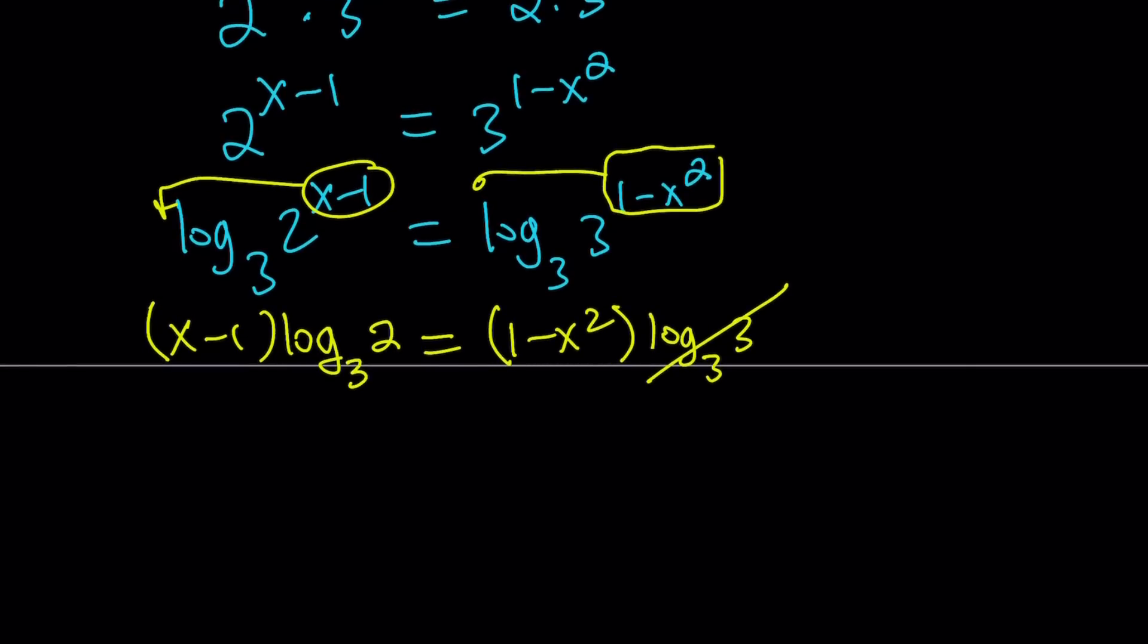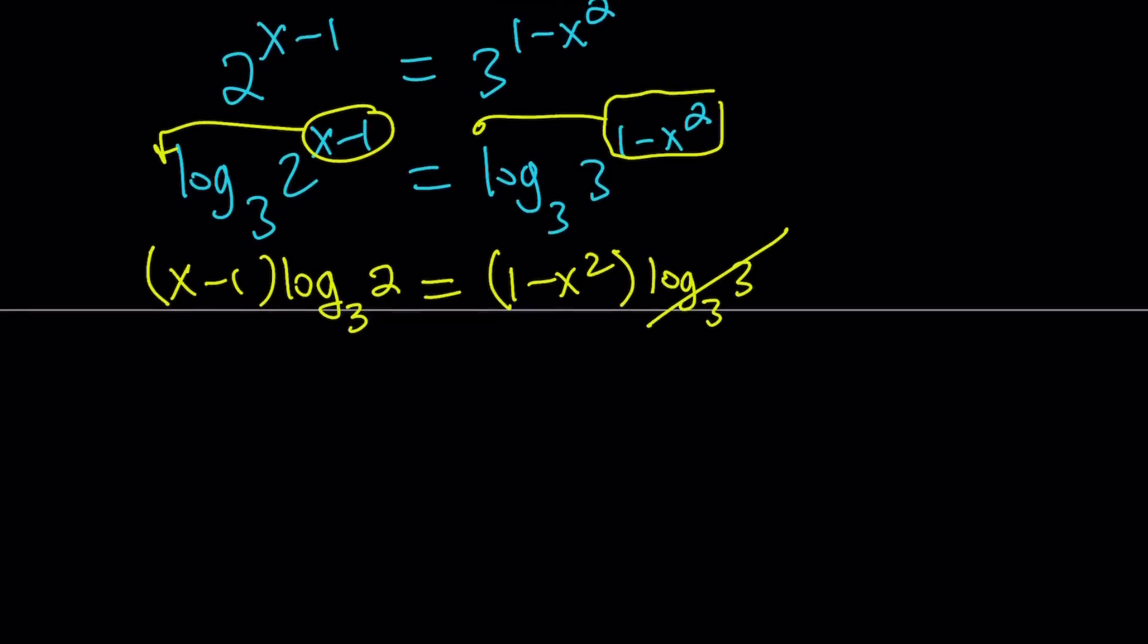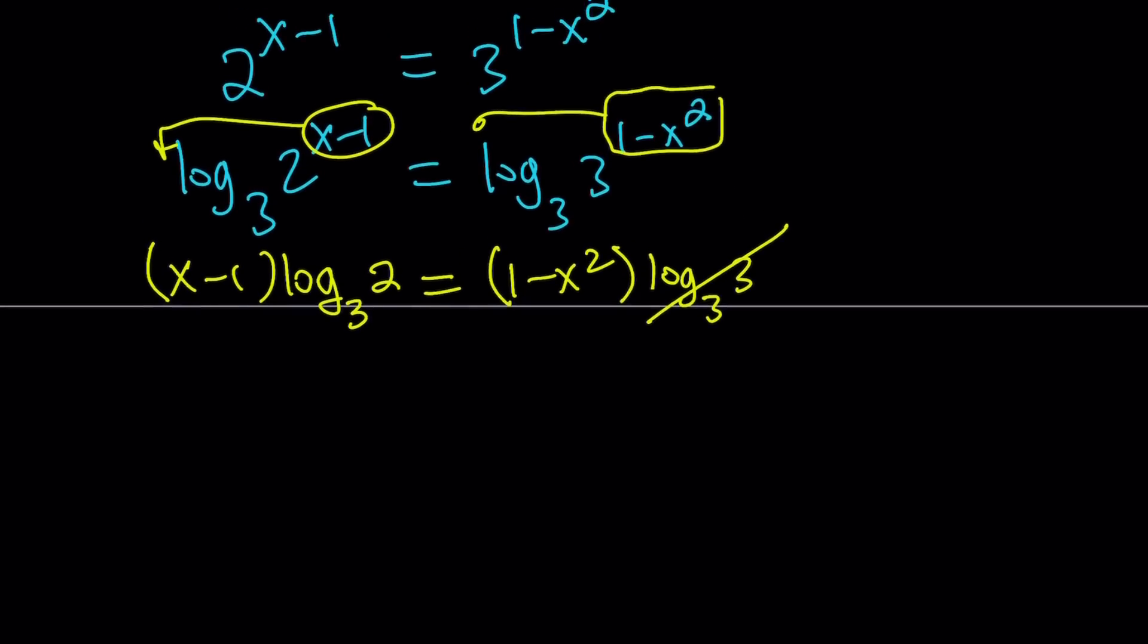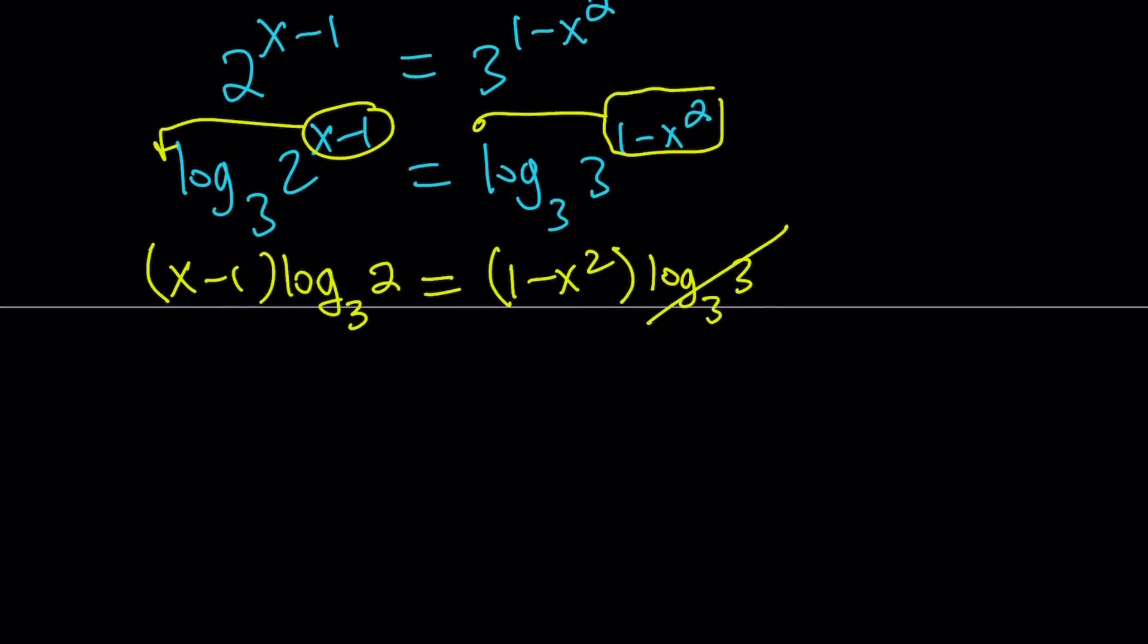Now, I know some of you are thinking, why don't we just cancel out the x minus 1 from both sides? You don't want to do that because you'll be losing some roots. So instead of canceling out, let's put everything on the same side. So (x-1)log₃2 plus x² minus 1, the whole thing equals 0. This is much better.